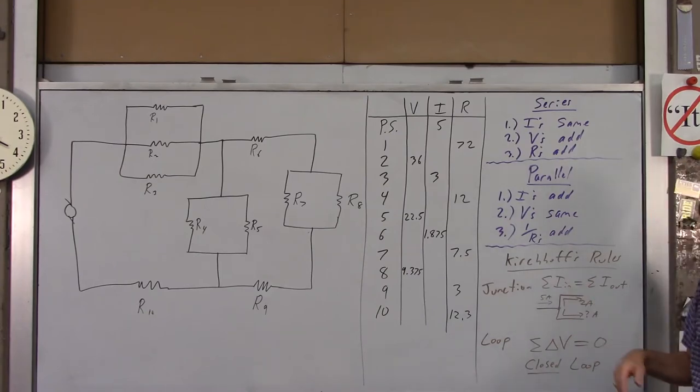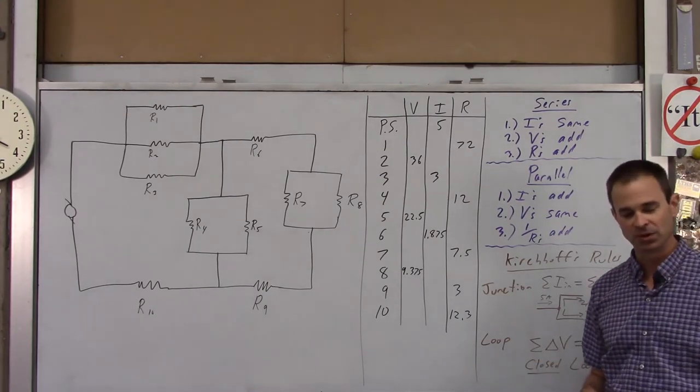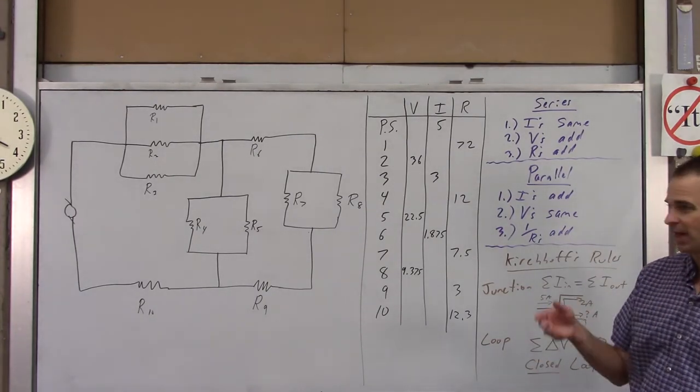And then very important, we've got Kirchhoff's two rules. We have the junction rule, which says the total current into a junction is the total current out. So for instance, if I have a junction right there and 5 amps comes into it and 2 amps goes that way, how much current's got to go that way? Hopefully you know it's 3 amps. And then the loop rule, which says the total voltage around any closed loop is 0. We'll use that near the end of this problem.